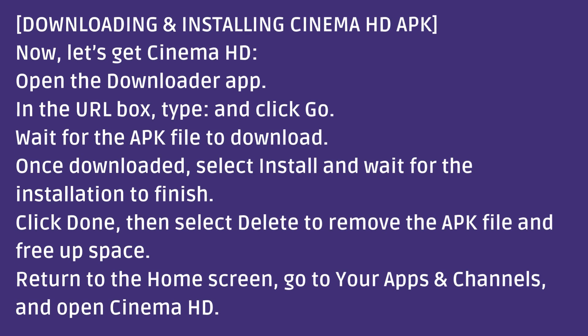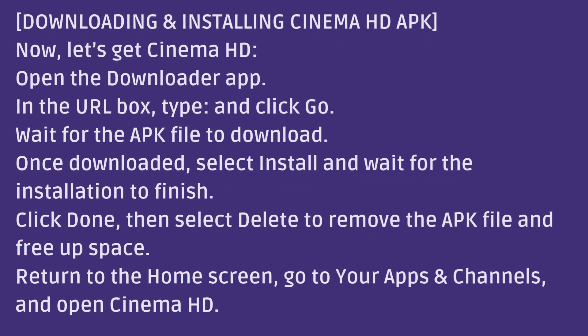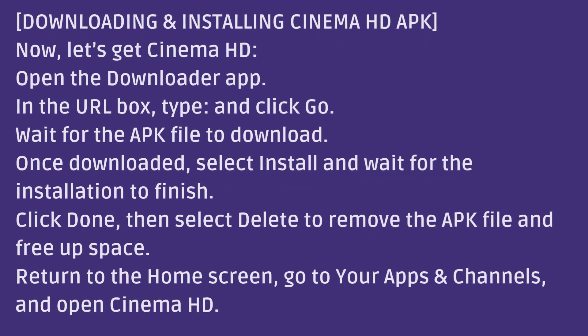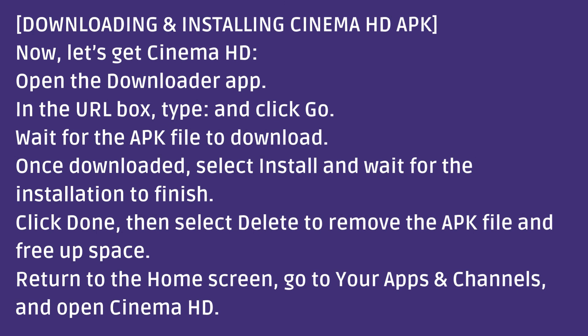Now let's get Cinema HD. Open the Downloader app. In the URL box, type the address and click Go. Wait for the APK file to download. Once downloaded, select Install and wait for the installation to finish. Click Done, then select Delete to remove the APK file and free up space. Return to the home screen, go to your apps and channels, and open Cinema HD.